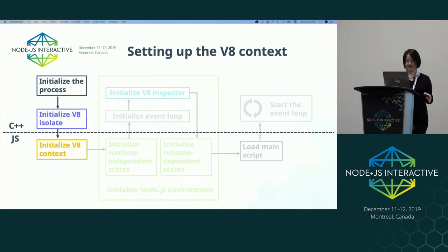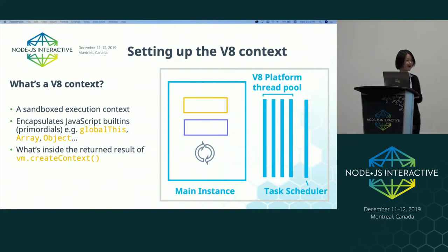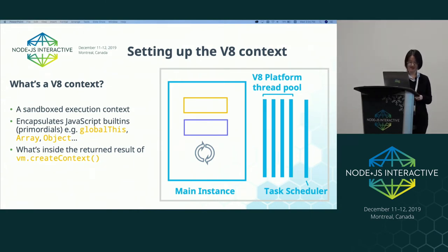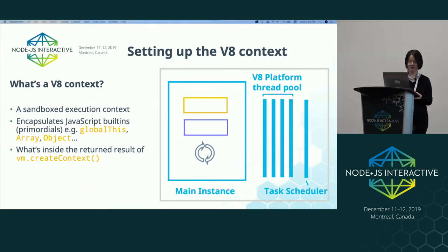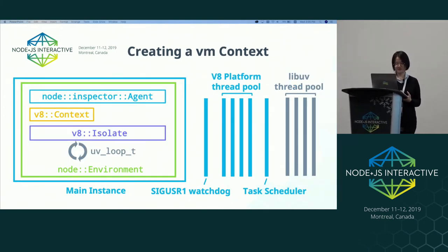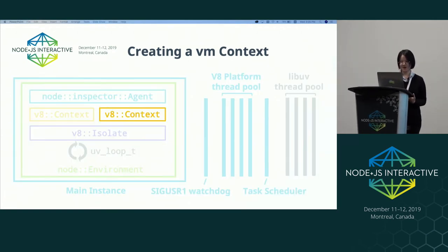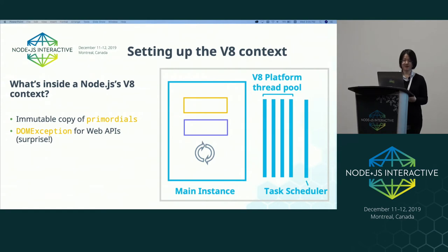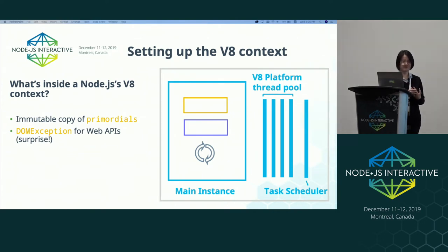Node then starts to initialize the V8 context. A V8 context is a sandboxed execution context that encapsulates JavaScript built-ins, also known as primordials, including globalThis, Array, Object, and others. When you call the VM module's createContext from userland later after Node has been bootstrapped, the result includes a new context with a different set of built-ins. When a user creates a new context sometime later after bootstrap, we only add one more context to the instance without doing any further setups. Node initializes the context by creating an immutable copy of the primordials so that internals can use them and won't be affected when users monkey-patch these built-ins.